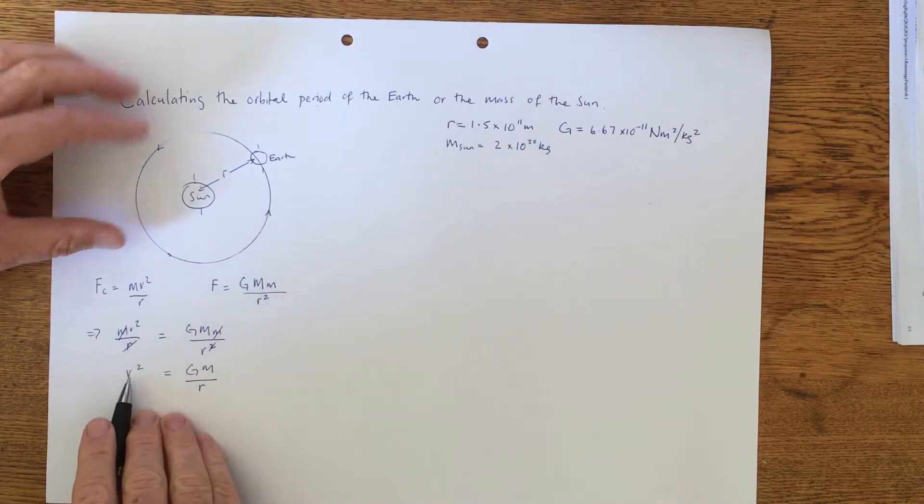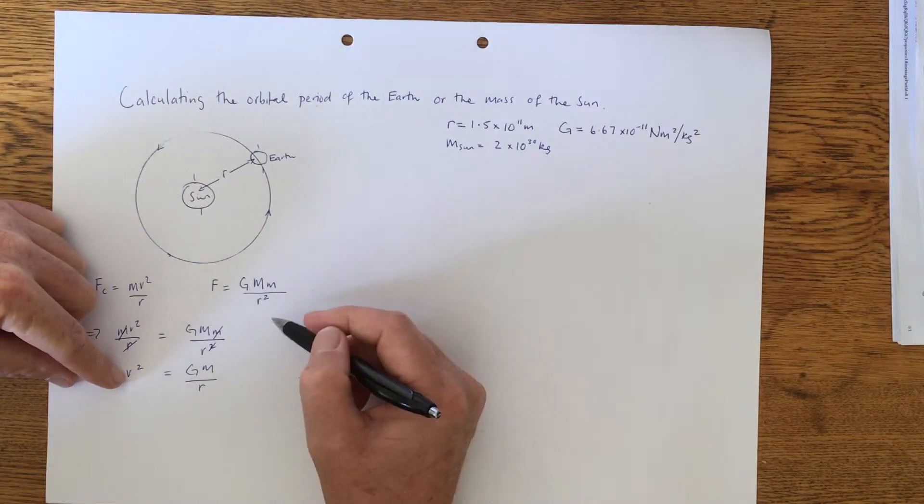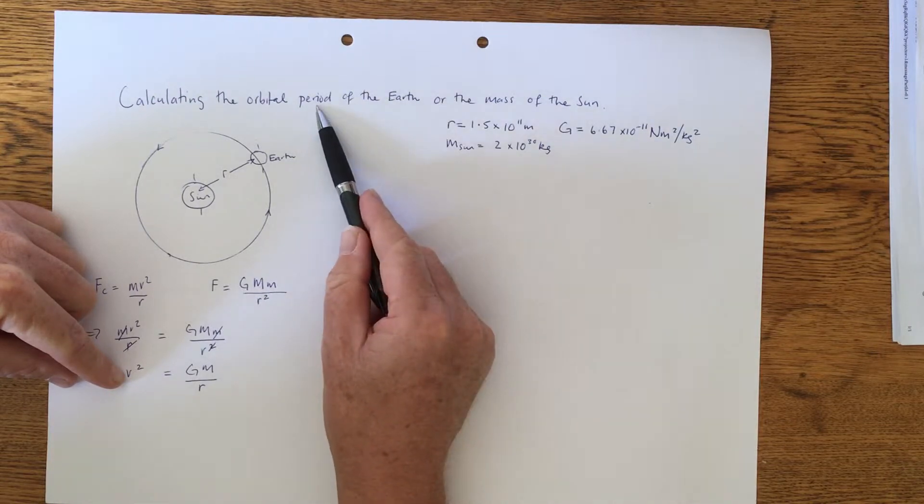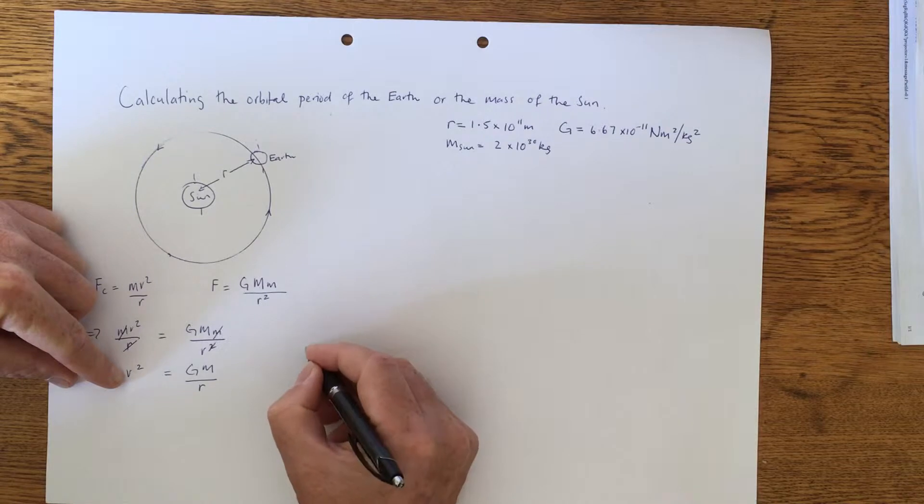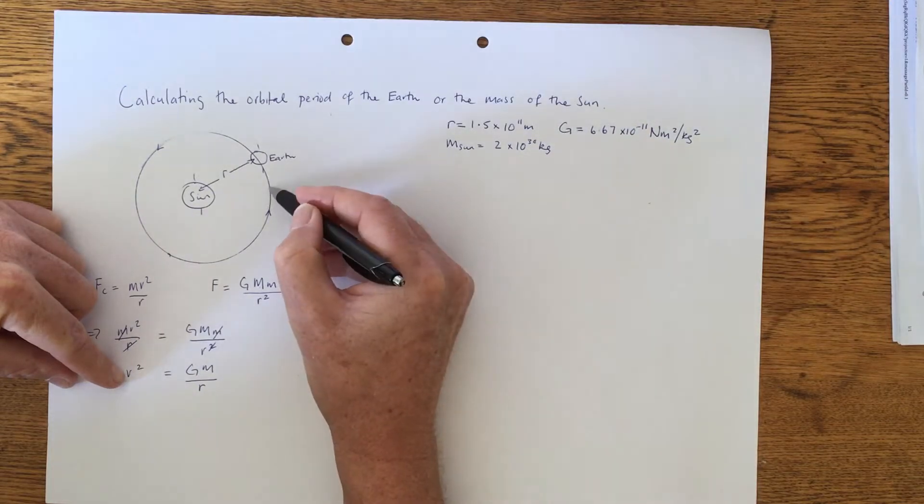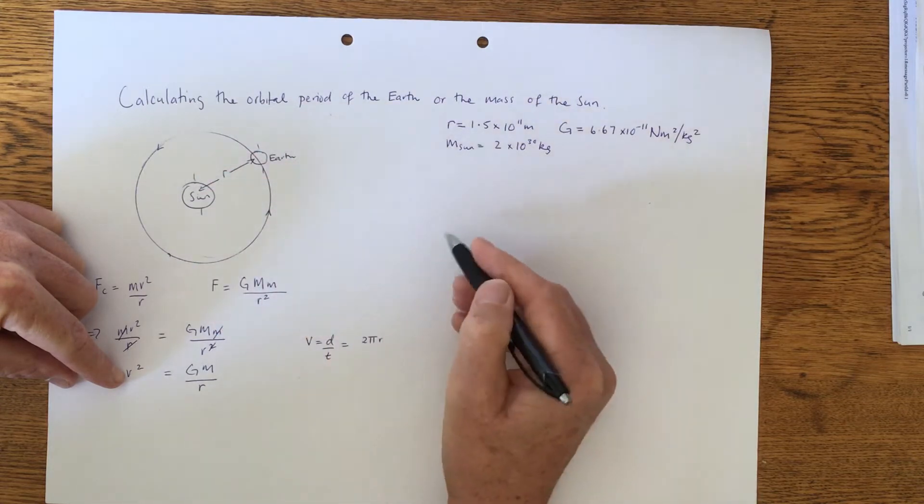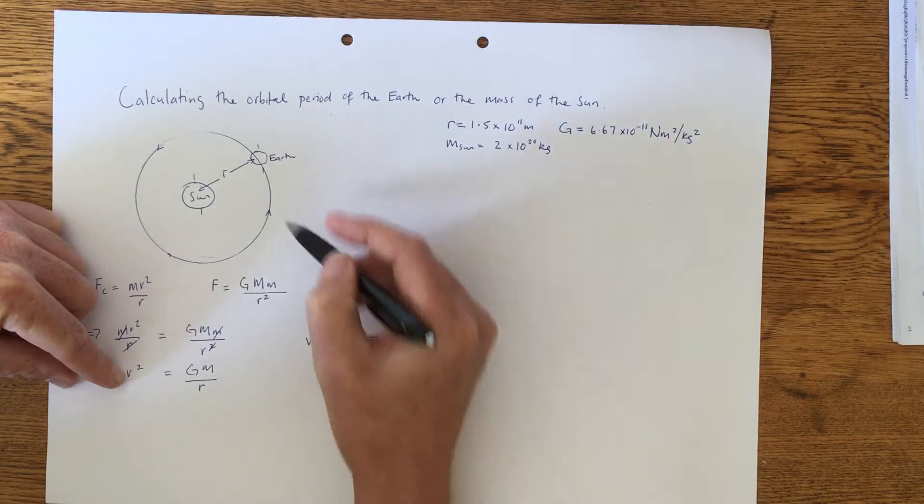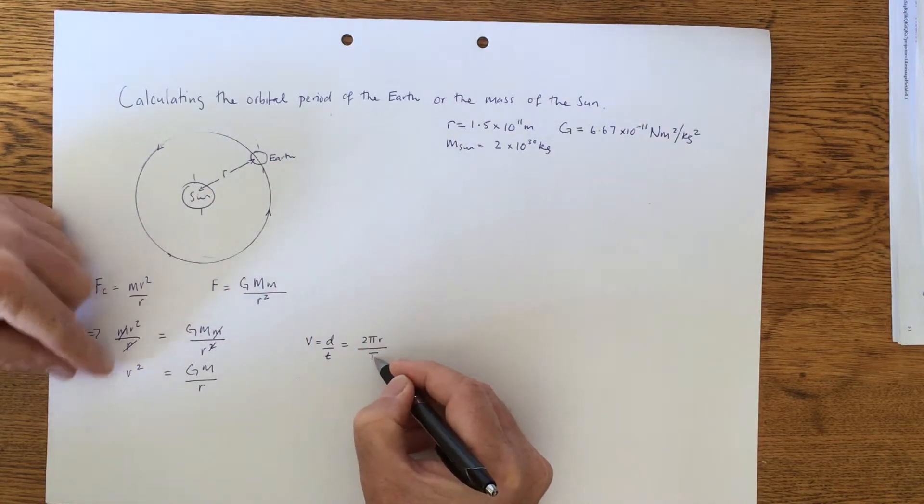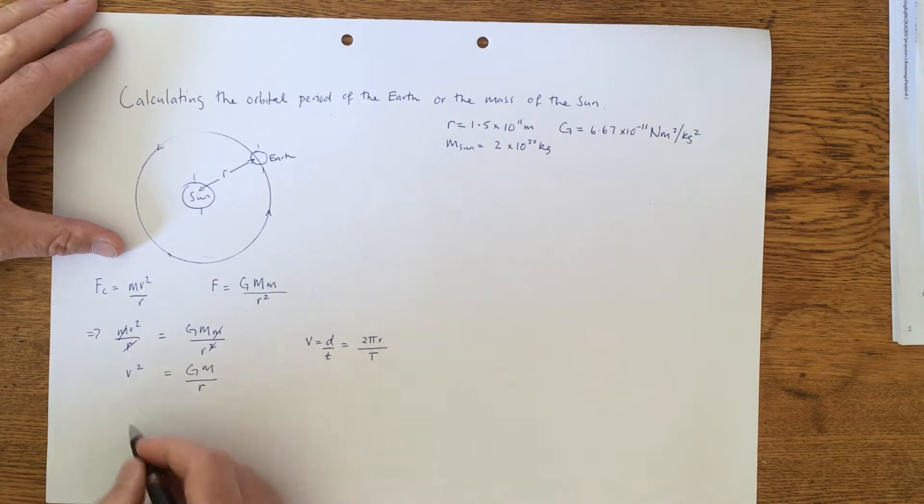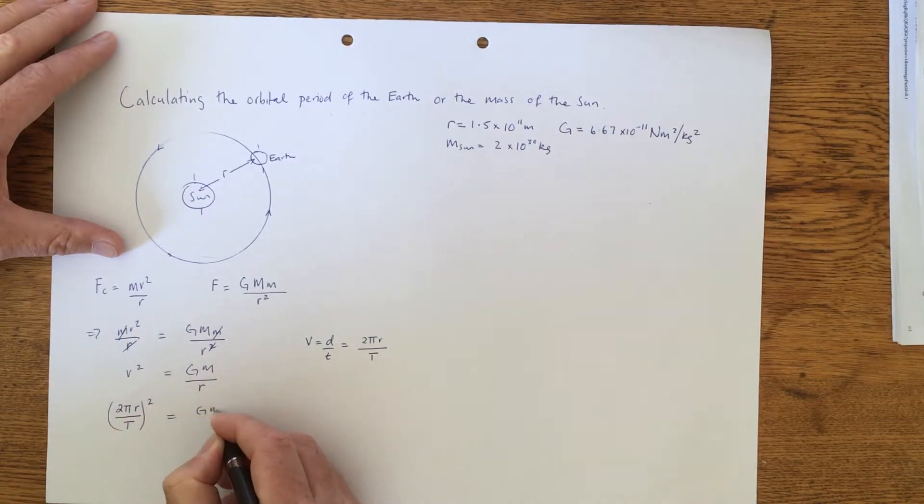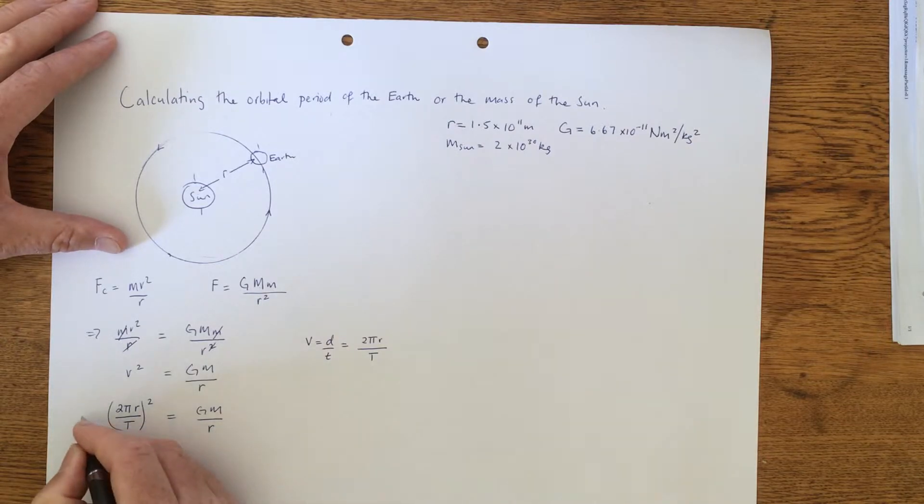And we're wanting the subject that we're wanting to find is the period T, the orbital period. And we know that velocity is distance divided by time from earlier work. And the distance to go right round once is 2πR, that's the circumference, divided by the period T. So if we pop that into the formula here, 2πR over T, and we put the brackets right round as a squared, that will equal the GM over the R.